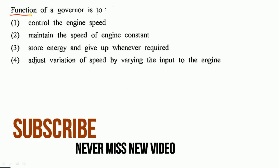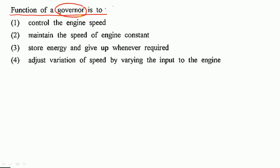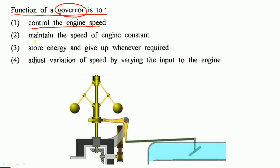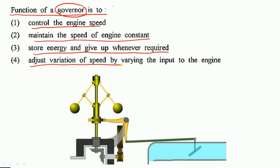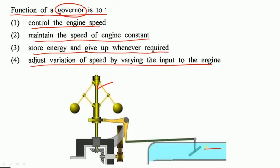The function of a governor is to: control the engine speed, maintain the speed of engine constant, store energy and give up whenever required, or adjust variations of speed by varying the input to the engine. The governor's function is to adjust the variation of speed by varying the input to the engine — by switching the input on and off we can vary the speed using a governor.